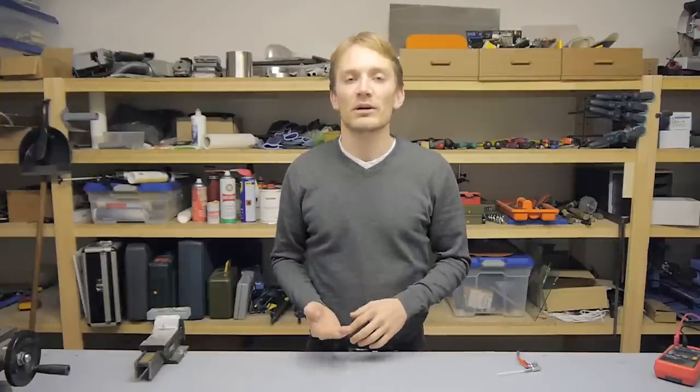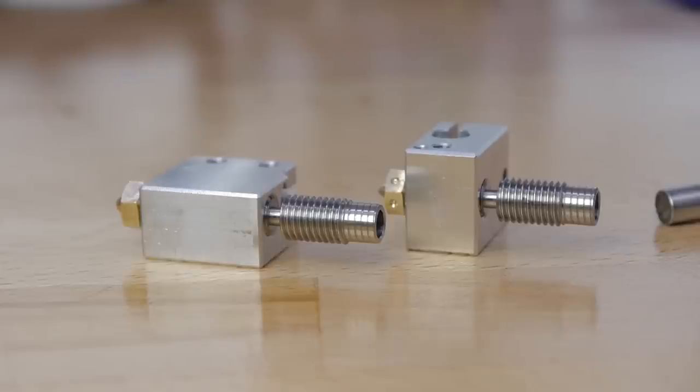As your Z endstop or any kind of bed probe will indicate the wrong height and potentially crash the Volcano right into the print bed. And since it has a longer lever to the turned-down part of the heatbreak when compared to a standard block, it does make the already not-so-tough heatbreak another bit more fragile.